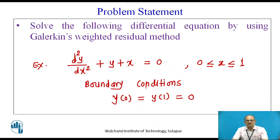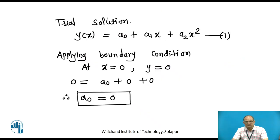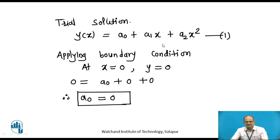The first step involved in the solution is the assumption of a trial solution. Let us assume the trial solution: y(x) = a0 + a1·x + a2·x². The thumb rule is that the number of constants in the trial solution should be more than the order of the differential equation. Since we are solving a second-order differential equation, I have chosen three constants: a0, a1, and a2.